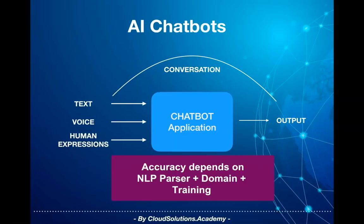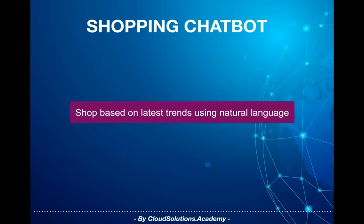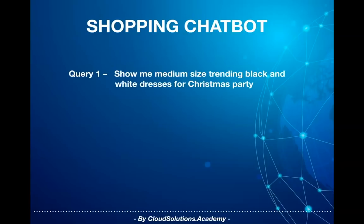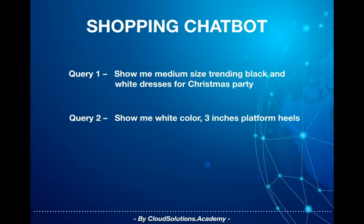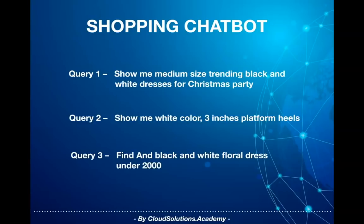Take an example of a shopping chatbot which advises users on what to buy based on the latest fashion trends. Consider three sets of queries from the user. The first query is: show me medium sized trending black and white dresses for a Christmas party. The second query is: show me white color 3-inch platform heels. And the third query is: find And black and white formal dress under 2000.